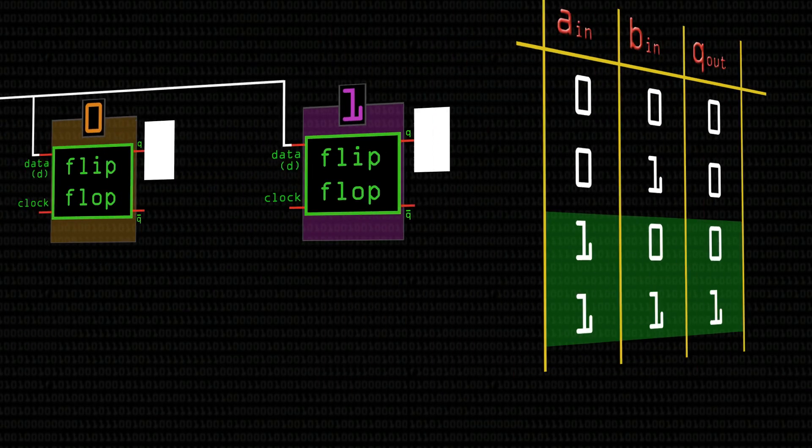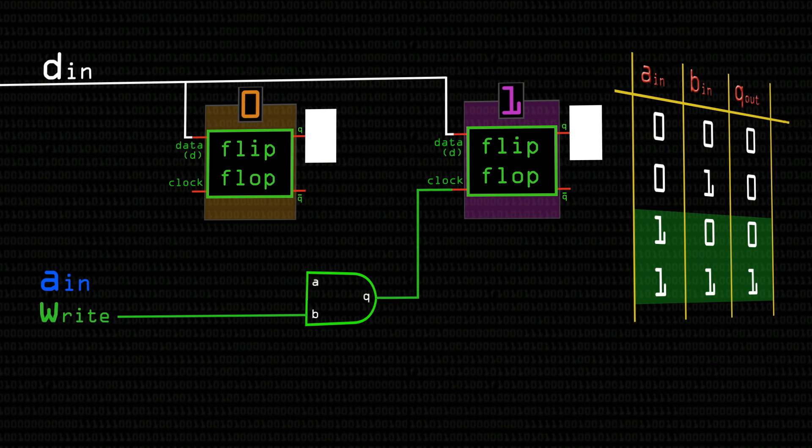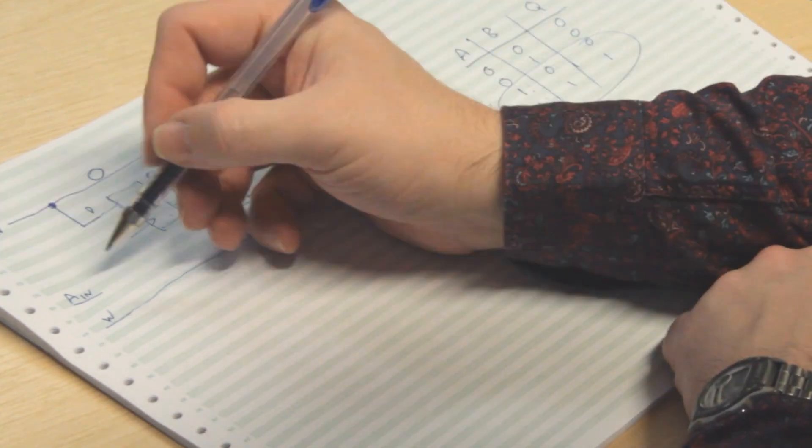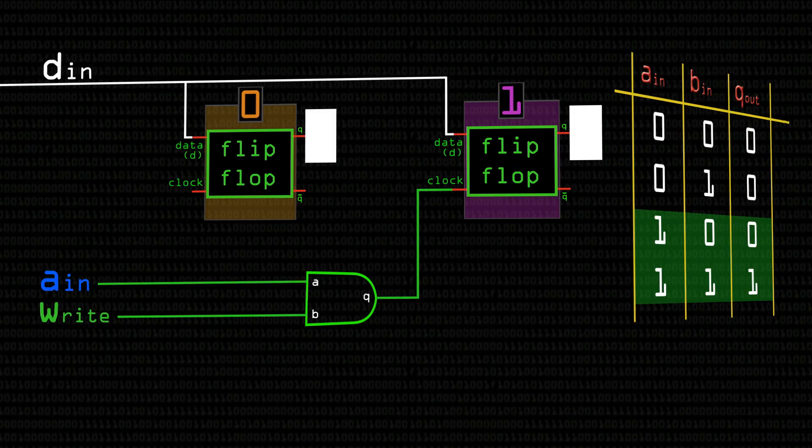We want clock to be whatever the value of W is, which we've connected to input B on the AND gate, whenever the input AIN is one. So we can just connect that line directly in like that. And so now whenever we strobe W, the clock input on flip-flop one will only be strobed if AIN contains one, or the address one.